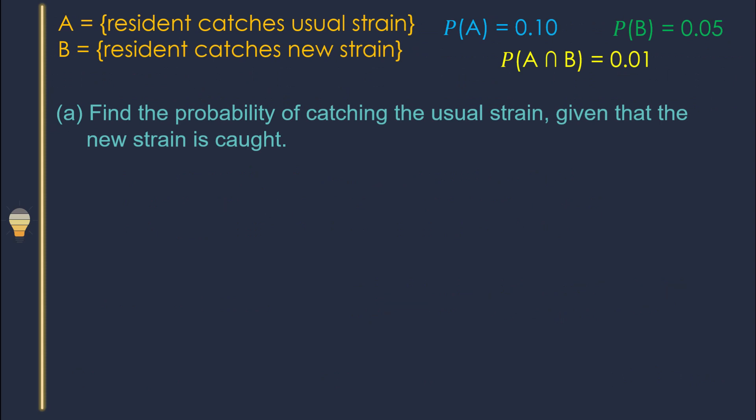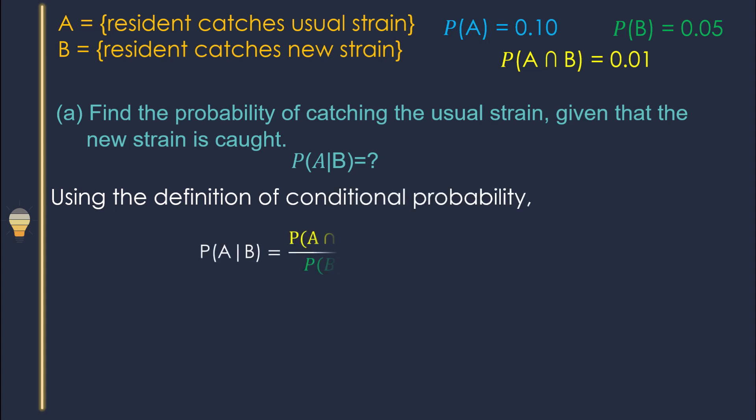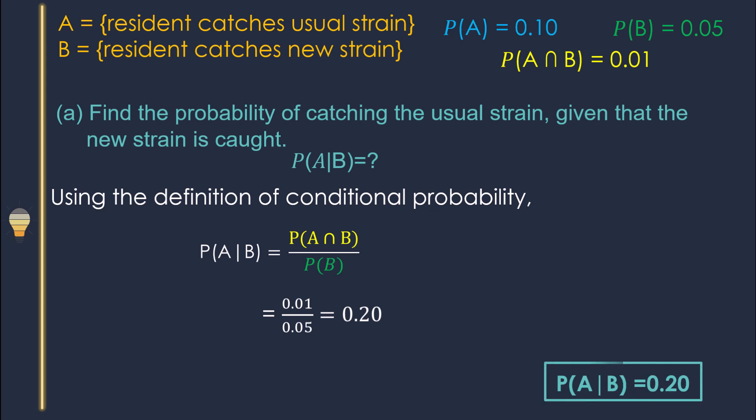Now go to Part A: find the probability of catching the usual strain, given that the new strain is caught. Usual strain means event A, and the new strain means B, so B is the condition. Therefore we need to find the probability of A given B. By the definition of conditional probability, P(A|B) equals P(A intersection B) divided by P(B). Now you know all the probabilities — just plug in the numbers and get the answer.